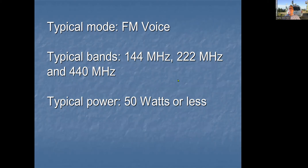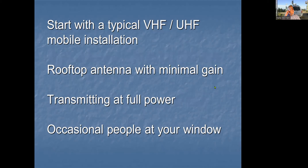Typically we're going to talk about VHF and UHF here, not HF over long distances. This is two meters to 440, typically running a mobile radio at 50 watts or less. We're not going to be concerned about handhelds because the rules are a bit different there and it's not something you can calculate on your own. So let's start with a typical simple installation — a spike antenna on your roof, a quarter-wave whip with no real gain over a dipole.